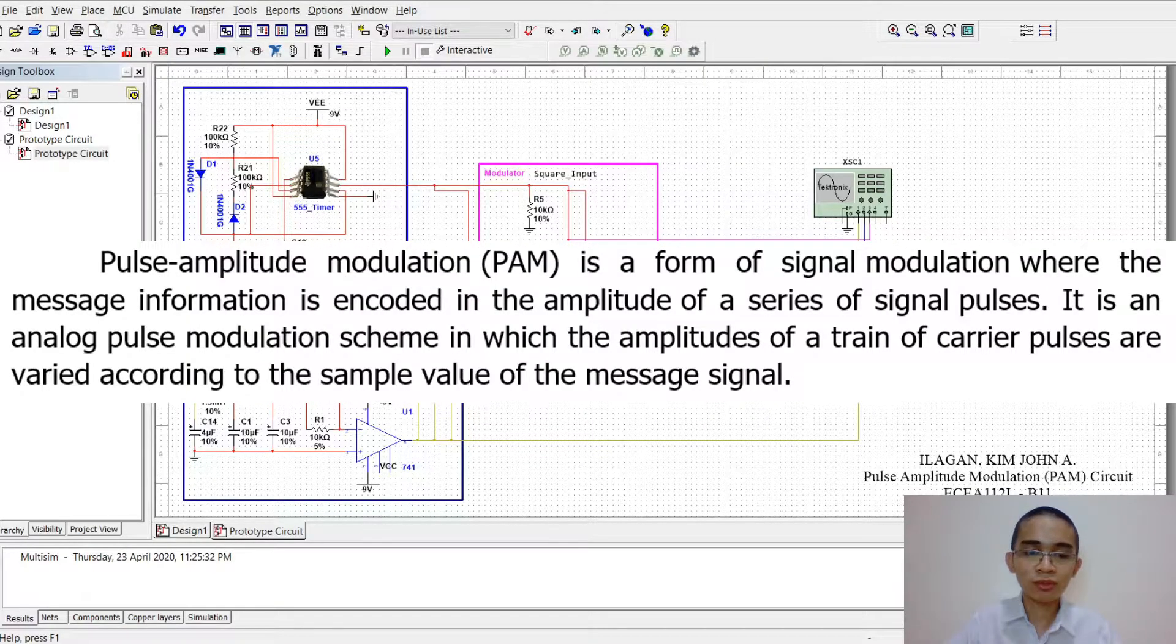First, what is PAM? Pulse Amplitude Modulation is a form of signal modulation where the message information is encoded in the amplitude of a series of signal pulses. It is an analog pulse modulation scheme in which the amplitudes of a train of carrier pulses are varied according to the sample value of the message signal.